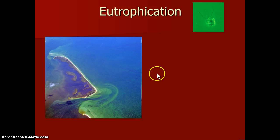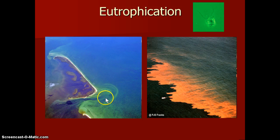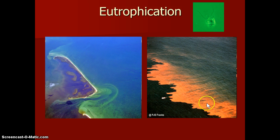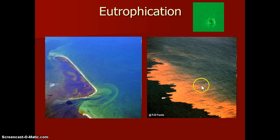The other thing to note is that eutrophication can not only cause blooms of normal green phytoplankton with all those negative effects, but it can also cause blooms of harmful phytoplankton — which cause things like red tides.